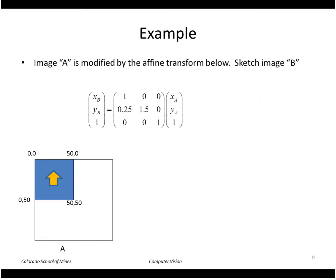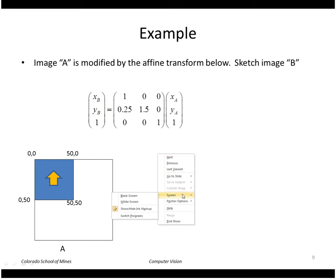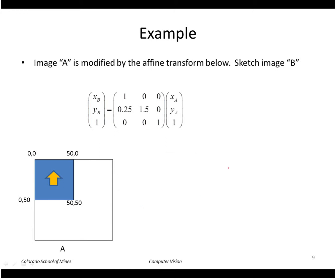Let's do another example. Let's say I have an image A, and I want to apply an affine transform given by this matrix to it to calculate image B. All the coordinates in A are remapped to some location in B. The easiest way to do this is to look at the corners of this square. So I'll make a list of X_A, Y_A and look at what points those are mapped to in B.